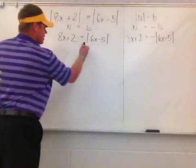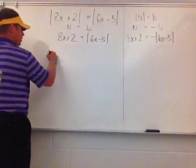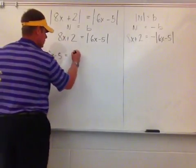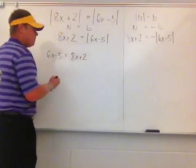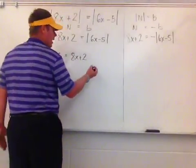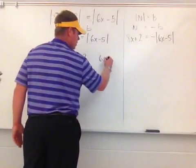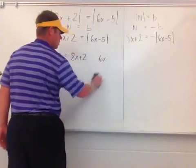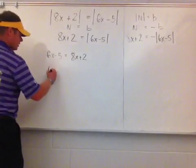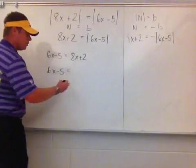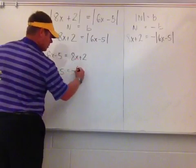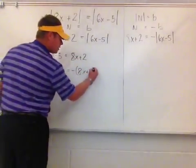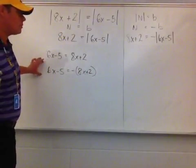I take 6x minus 5, which is my n, and set it equal to b, which is 8x plus 2. Then again, I've still got this 6x minus 5, so I write it right below it: 6x minus 5 is now equal to the opposite of whatever my b was. So I stick my b, which represents the quantity 8x plus 2, on the other side with a negative. These are the two problems I'm going to solve.